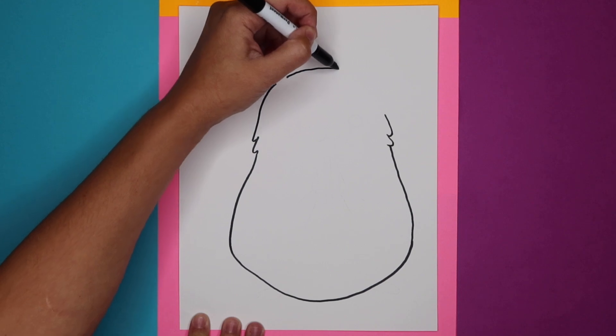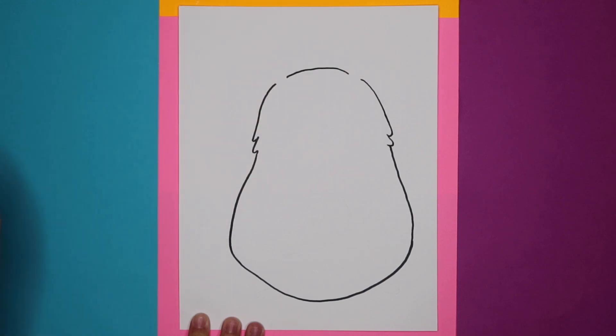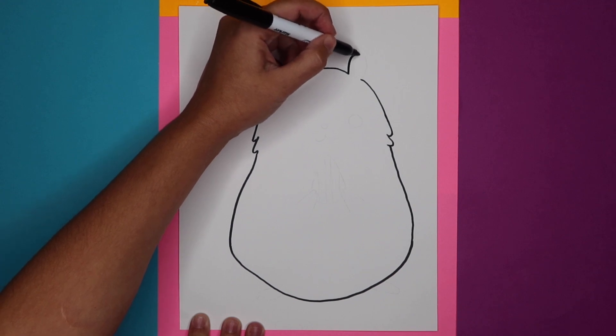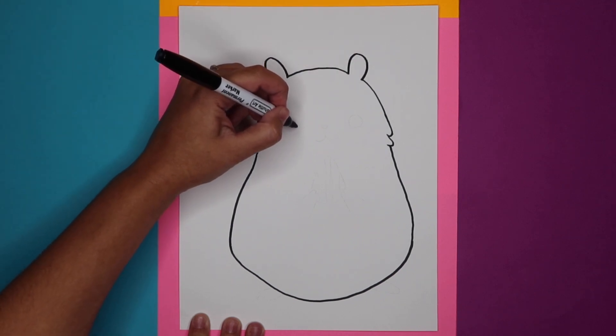Make sure that you leave a little space for those ears. And then we're gonna make an N and go up and loop down. Alright, let's make those eyes.